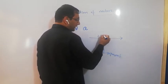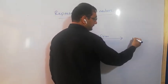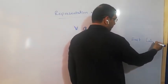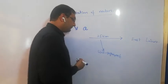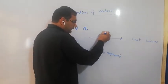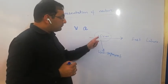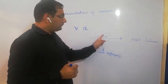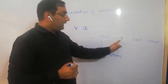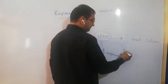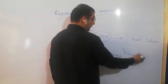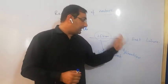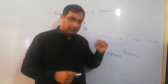For example, a vector of 25 km East, like Lahore 25 km East. This line segment represents a magnitude — a number and a unit — as well as a direction. If it is just magnitude, it will be a scalar quantity.